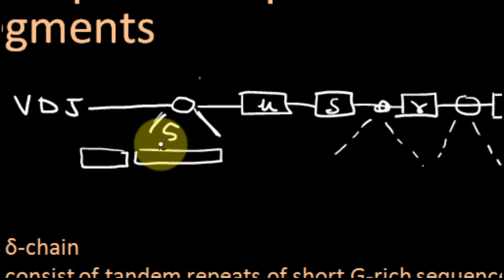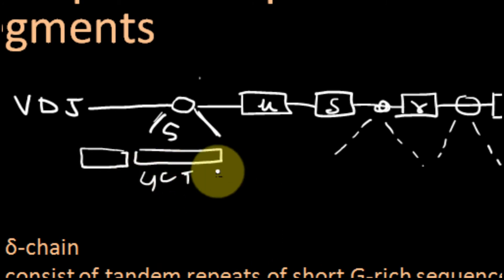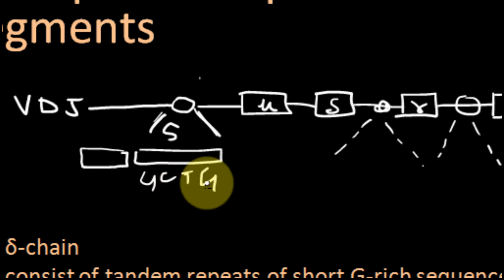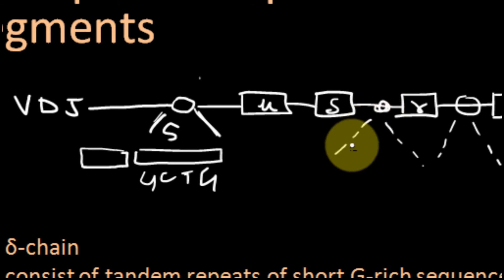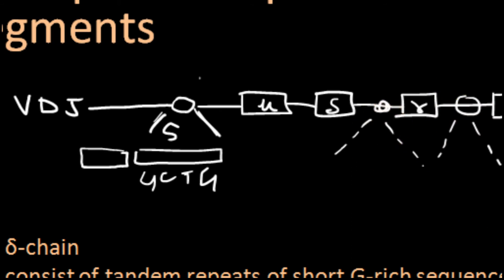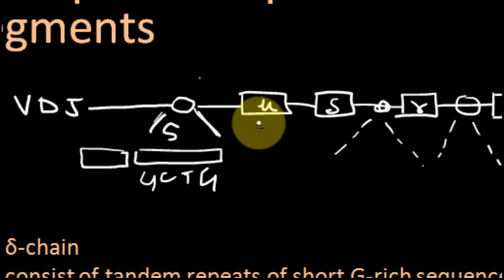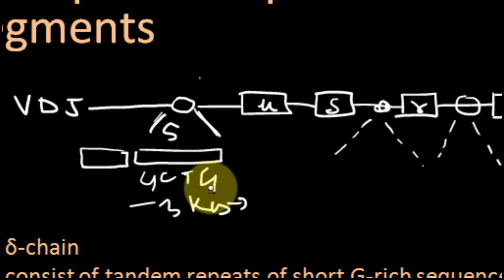These are called switch regions — similar to a fan switch or light switch, they can turn on or turn off. The switch region, also called the S region, mainly contains tandem repeats of short G-rich sequences — G-rich sequences of about 20 to 80 base pairs in length. These sequences differ among all isotypes, but they are all G-rich. The overall length of these S regions can range from 1 kb to 12 kb — for example, the S region upstream of mu is about 3 kb.